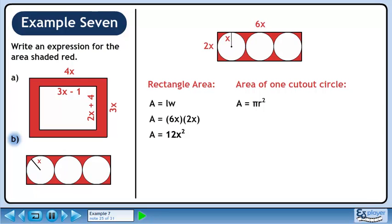The area of 1 cutout circle is πr². Plug in x for the radius to get the expression πx². Now we need to determine the area of 3 cutout circles. Multiply the area of 1 cutout circle by 3 to get 3πx².